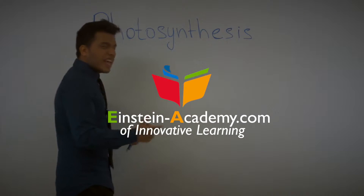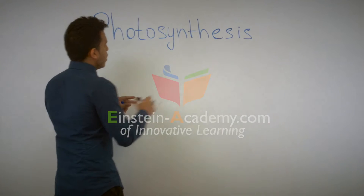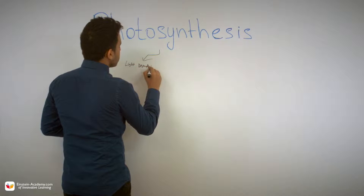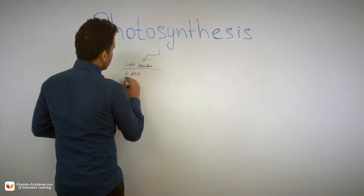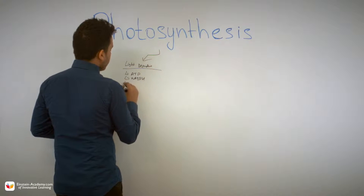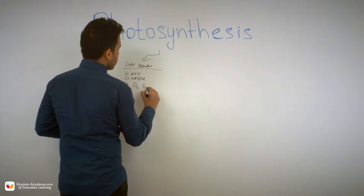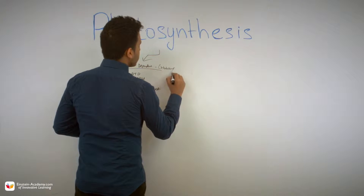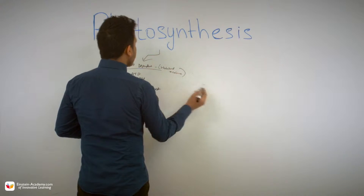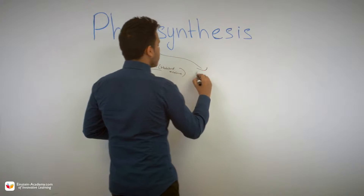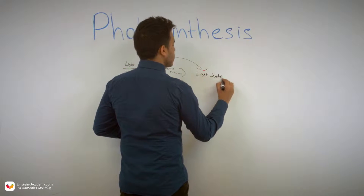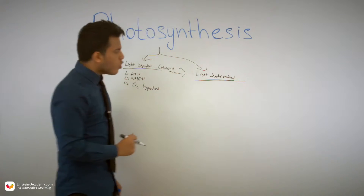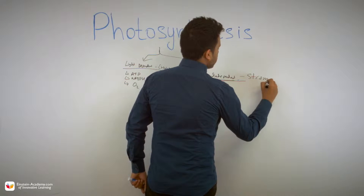Now let's learn about the dark reaction, or the light-independent reaction. In the last video, we covered the light-dependent reaction, where we got ATP, NADPH, and generated oxygen as a byproduct. The light-dependent reaction takes place in the thylakoid membrane. Now we can start talking about the light-independent system, which occurs in the stroma.